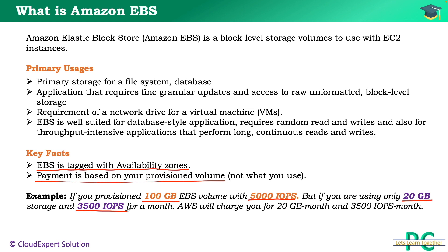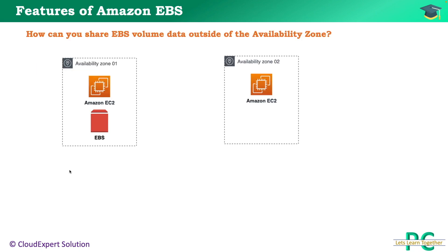although you haven't used EBS at full capacity, AWS will charge you for 100 GB/month and 5000 IOPS. As mentioned, you can only attach an EBS volume with an EC2 instance from the same availability zone. Now if you have a use case where you need to access the data from a different availability zone, how can you share the EBS volume data outside the availability zone?